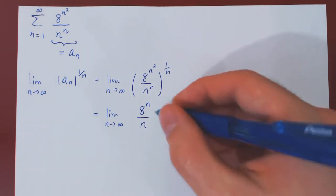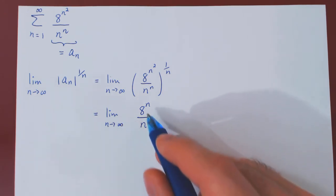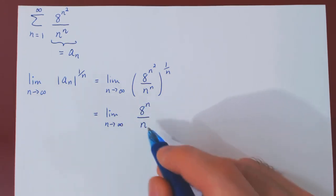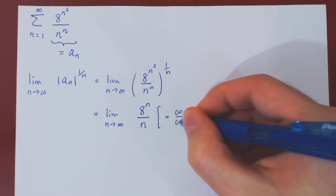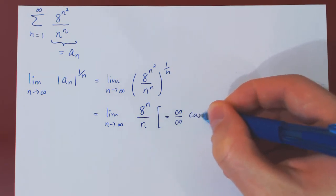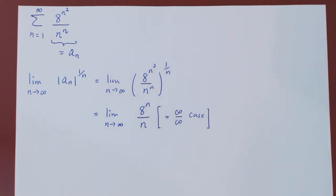What we now have is a non-trivial limit. As n tends to infinity, 8 to the n tends to infinity, and n clearly tends to infinity. So we have a non-trivial case, infinity over infinity. But, we can think of using L'Hopital's rule.